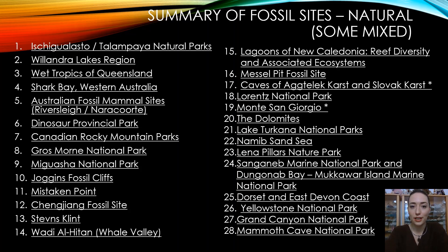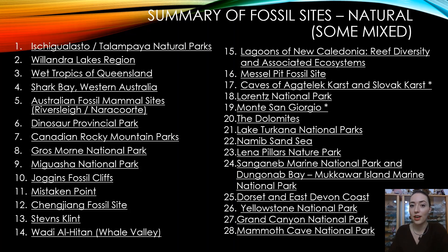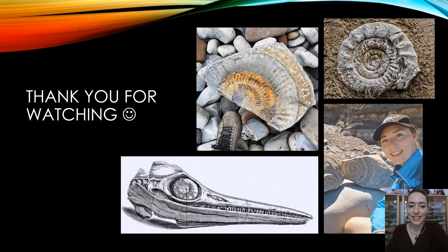To summarize the natural fossil sites, removing the anthropological ones, there are closer to 28 sites rather than the original 48 UNESCO counts. I think the anthropological sites should potentially have their own category rather than being classed as fossil sites, but it is a blurred line and hasn't had much discussion. That's what I've got for you today — thank you so much for watching. If you enjoyed this video, please give it a like, subscribe, let me know in the comments what you think of this topic, and hopefully I'll see you next week!